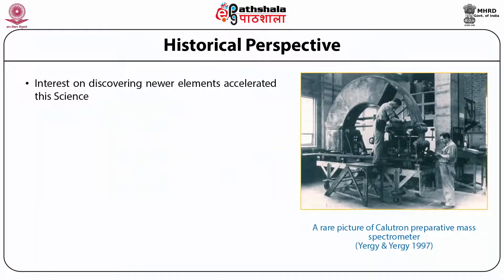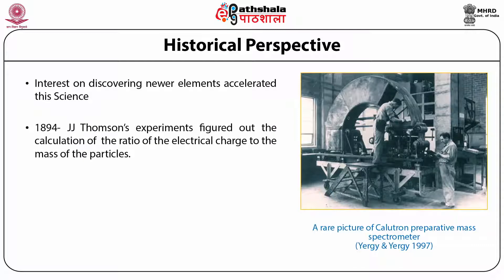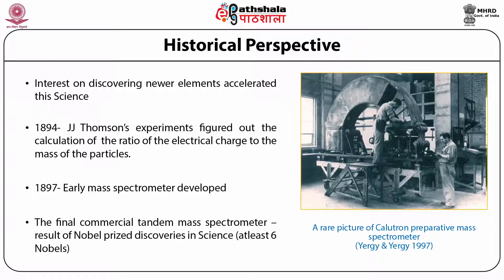Interest in discovering newer elements accelerated developments in mass spectrometry. In 1884, JJ Thompson's experiments calculated the ratio of electrical charge to mass of particles, initiating the development of mass spectrometers. By 1897 early mass spectrometers were used for identification of isotopes. The final commercial mass spectroscopy came to market about 20 years ago, with almost six Nobel discoveries contributing to the construction of modern mass spectrometers.